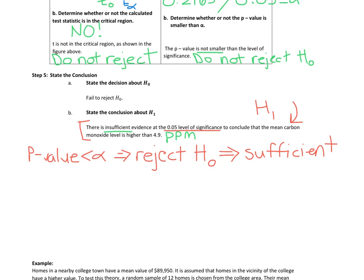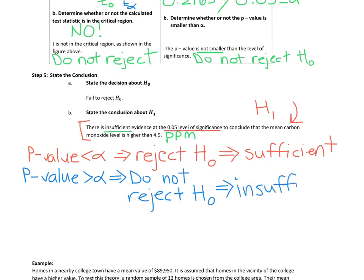The other scenario that we're going to have is if the p-value, and that's what we just did in this example, the p-value was bigger than alpha. If that's the case, we do not reject the null. And if we do not reject the null, can we support the alternative? No. So we found insufficient evidence to support the alternative.